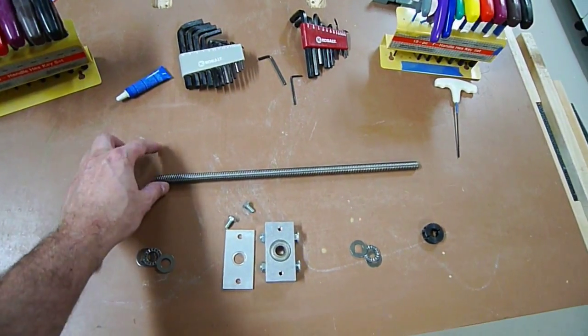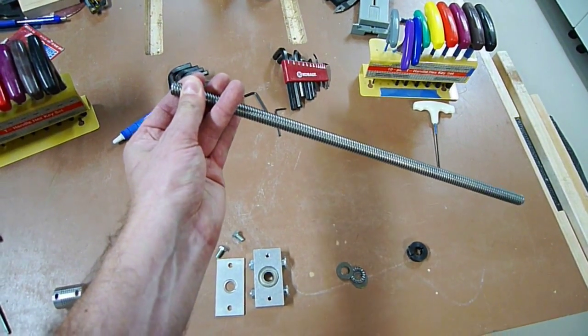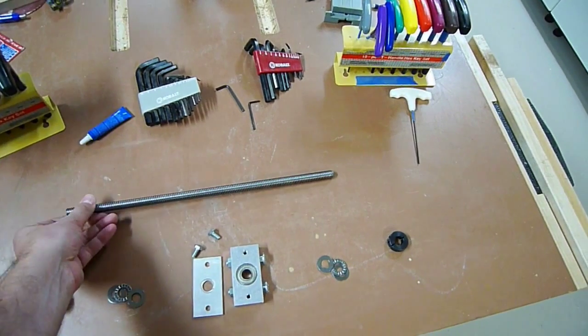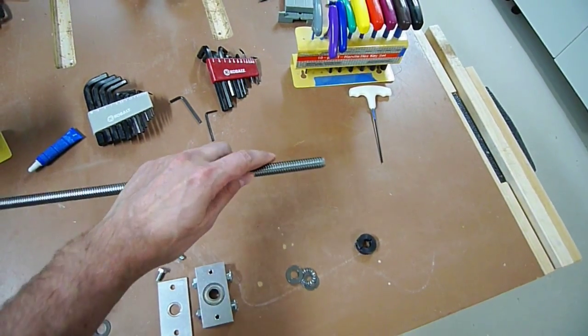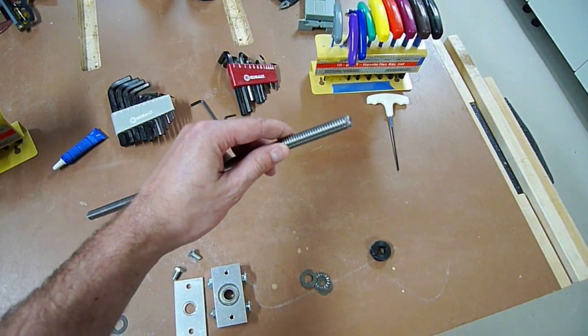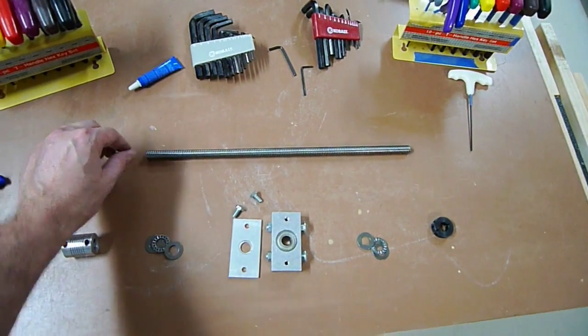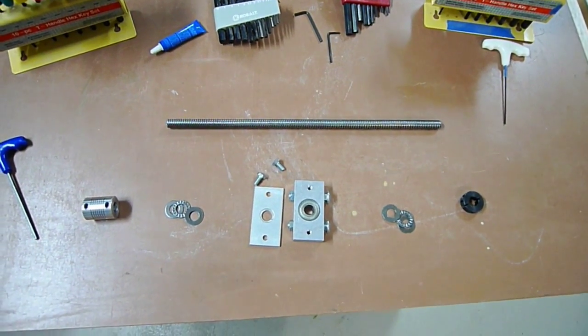First thing I want to tell you about is the actual lead screw itself. The one that I'm using is a five start, and you're going to want to make sure that at least one of the ends on there has been filed down so that you can screw it into that anti-backlash nut. If not, you'll ruin the threads. So that's that. Let me explain how this all works.